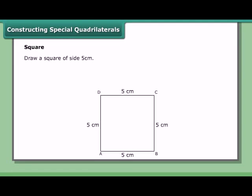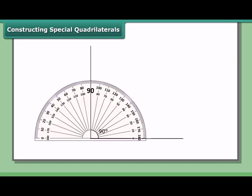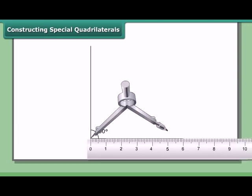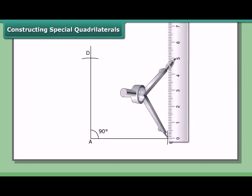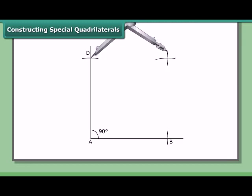Constructing a special quadrilateral — the square. Draw a square of side 5 cm. All angles are right angles and all sides are equal. Steps: draw a right angle at point A. Set the compass to 5 cm and cut off sides AB and AD along the arms of the right angle. With B as center and the same radius, draw an arc. With D as center and the same radius, draw an arc to intersect. Join point C to B and D. ABCD is the required square.